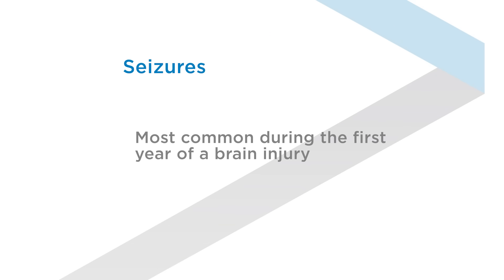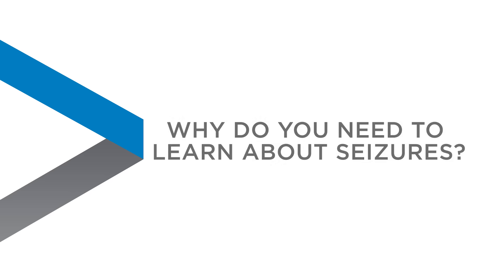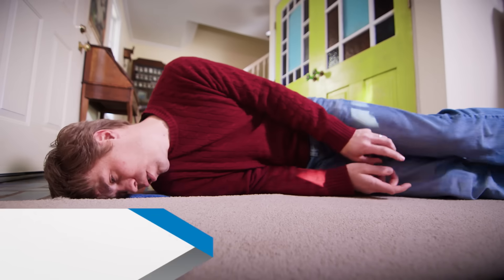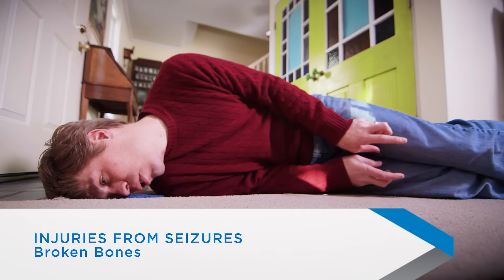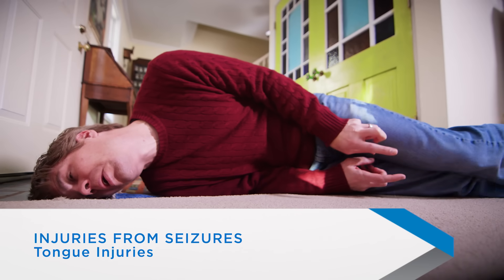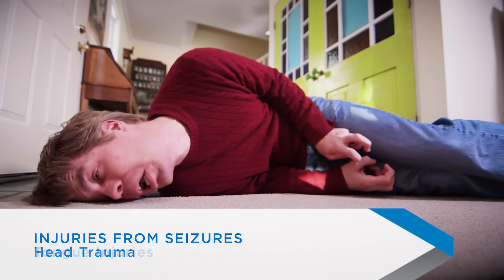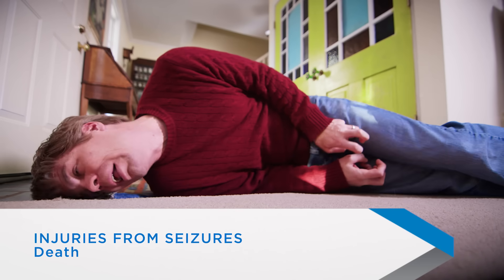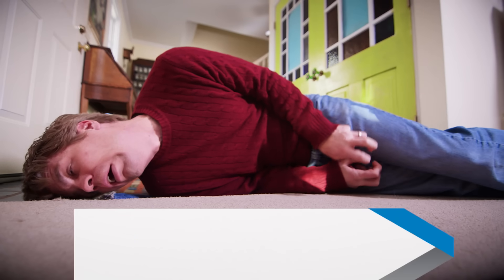Seizures are most common during the first year after a brain injury. When having a seizure, a person is at risk for getting other injuries, especially if they fall. Injuries can include broken bones, injuries from biting their tongue, further brain injury from hitting their head. In extreme cases, it can even lead to death.